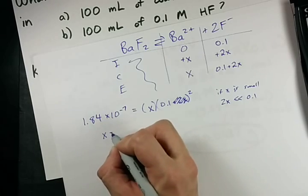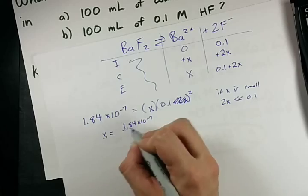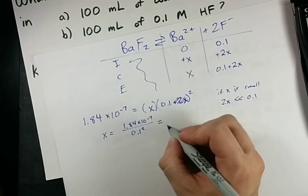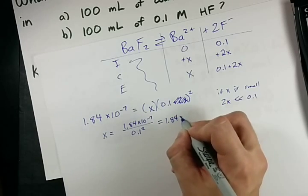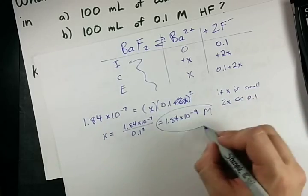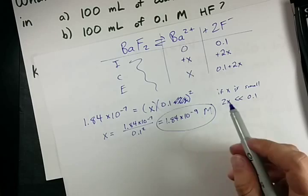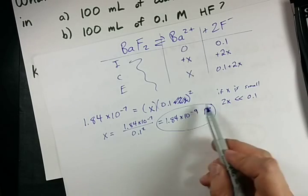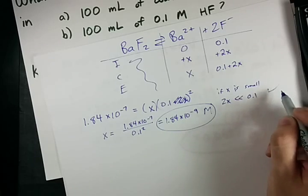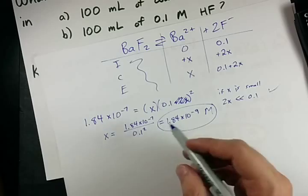Let's solve for x and see what happens. Well actually this one's easy to solve now. 1.84 times 10 to the negative 7 divided by 0.1 squared. I can do that in my head. That's 1.84 times 10 to the negative 9 moles per liter will dissolve. Interesting. That's way less. First of all, 2 times that is way less than 0.1. So that assumption was okay.